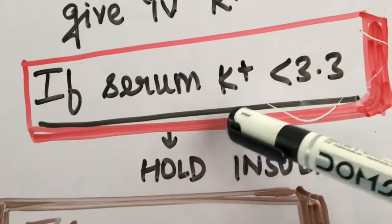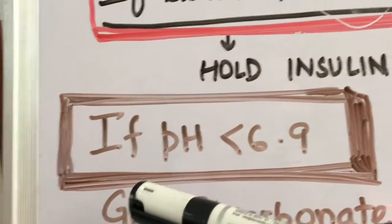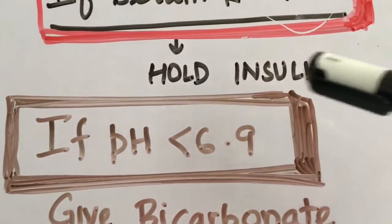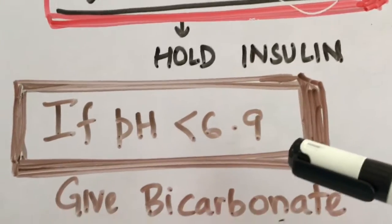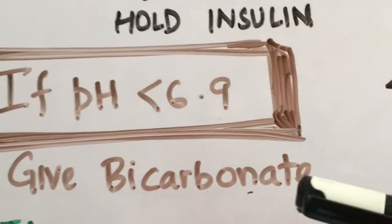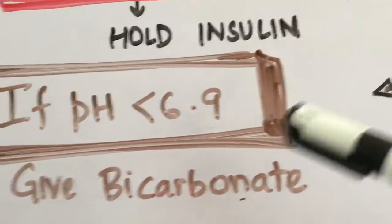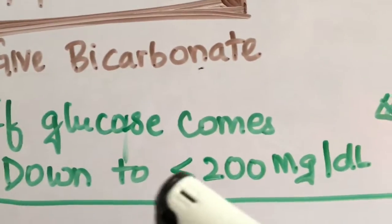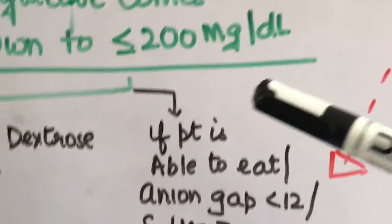After that, the condition comes if pH is less than 6.9, that is it is going towards the acidic side, so you have to give bicarb. Otherwise you don't need to give bicarbonate in such cases. Now if the glucose level comes down to less than 200...